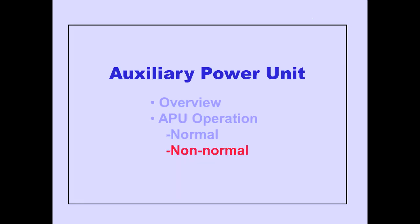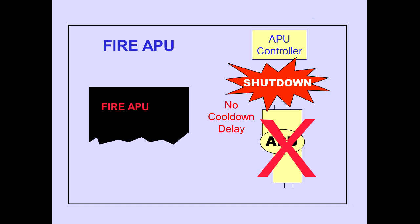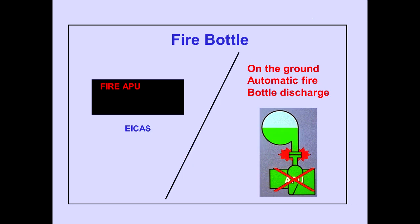Let's discuss APU non-normal operation. The EICAS warning message, Fire APU, is displayed when an APU fire is detected. The APU automatically shuts down without the normal delay for cool-down. On the ground, the APU fire bottle is automatically discharged into the APU compartment.